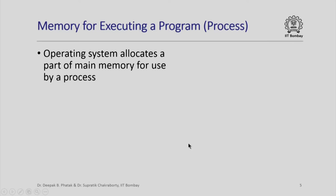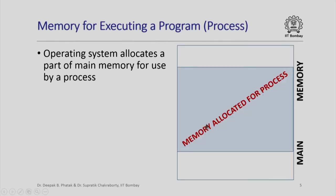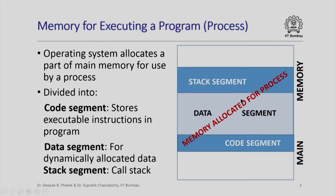If you also recall from our earlier lectures, we had said that when a program executes, or in other words when a process runs, the operating system allocates a part of main memory for use by the process. This memory in turn is divided into three segments: the code segment which stores the executable instructions in the program, the data segment for dynamically allocated data, and the stack segment which basically stores the call stack, which has the activation records of all functions that are called in the program. Each activation record has memory allocated for all local variables of the corresponding function.